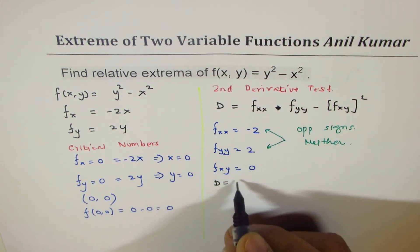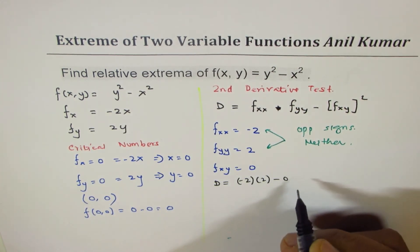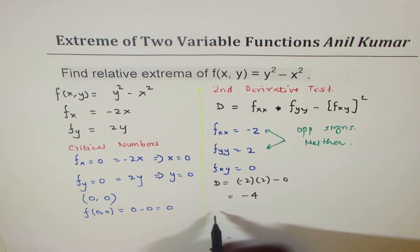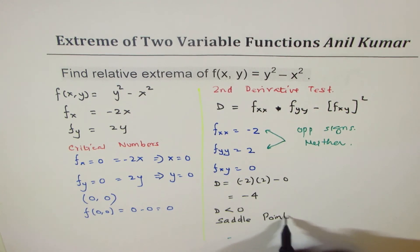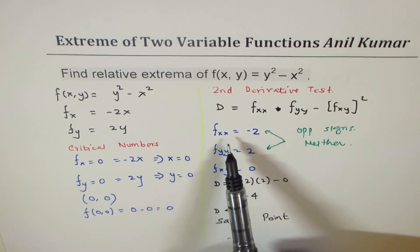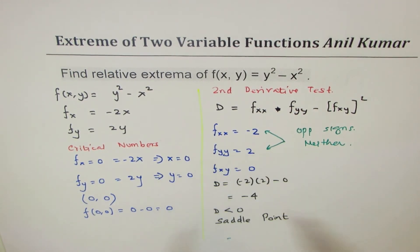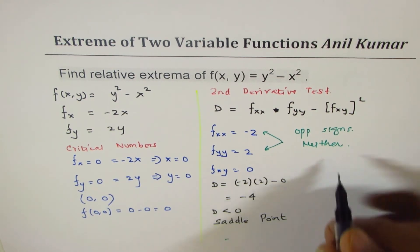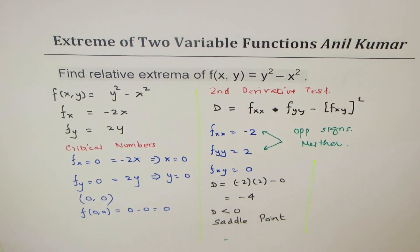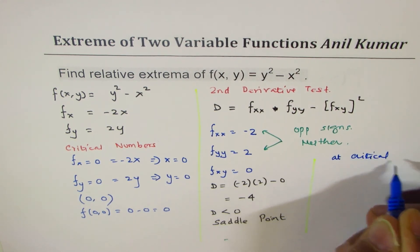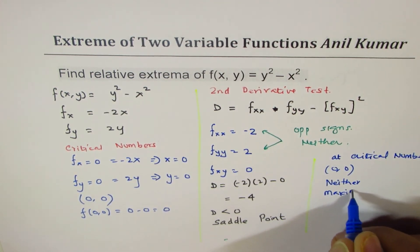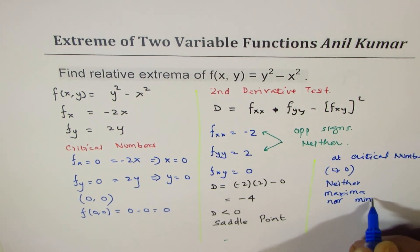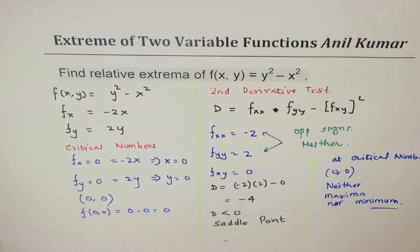Computing D: (-2)(2) - 0² = -4. Since D < 0, this is a saddle point. The second partial derivative with respect to x is negative and with respect to y is positive. Therefore at the critical number (0, 0), we have neither a maximum nor a minimum.